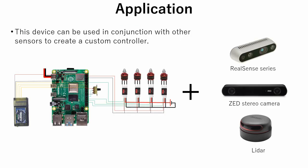Raspberry Pi can be used in conjunction with other sensors to create a custom controller. For example, the most commercially available flight controllers for drones are not made to work with cameras or lidars. But in this case, we can program Raspberry Pi to control motors according to sensor values obtained from these devices.